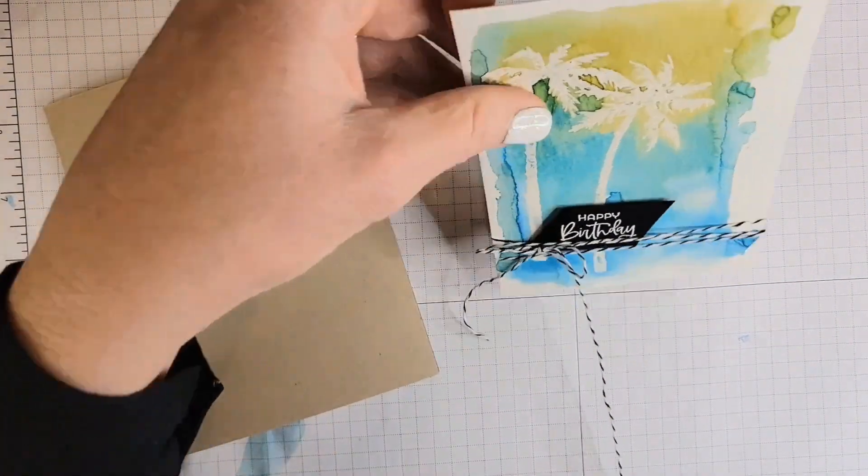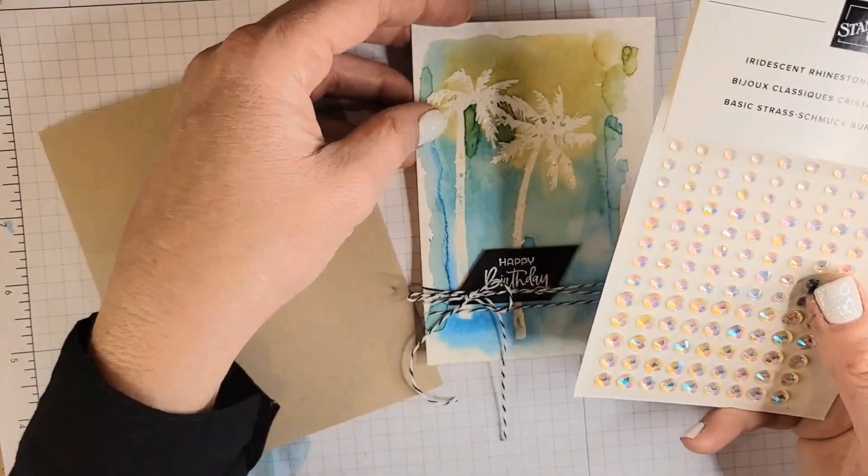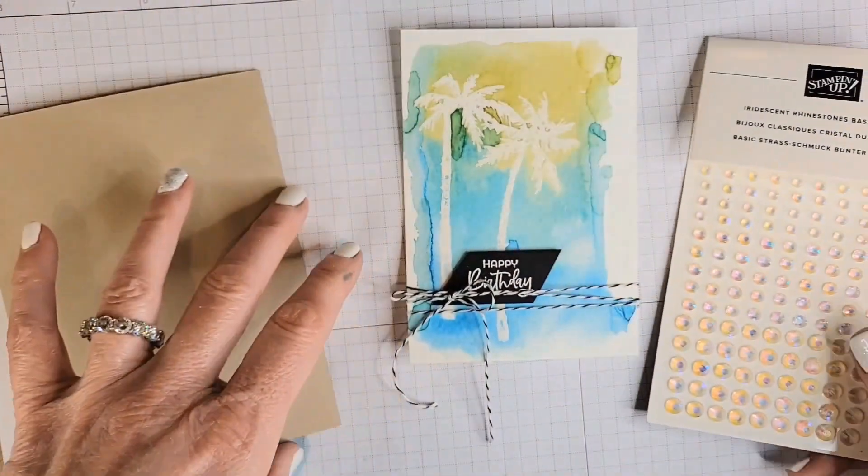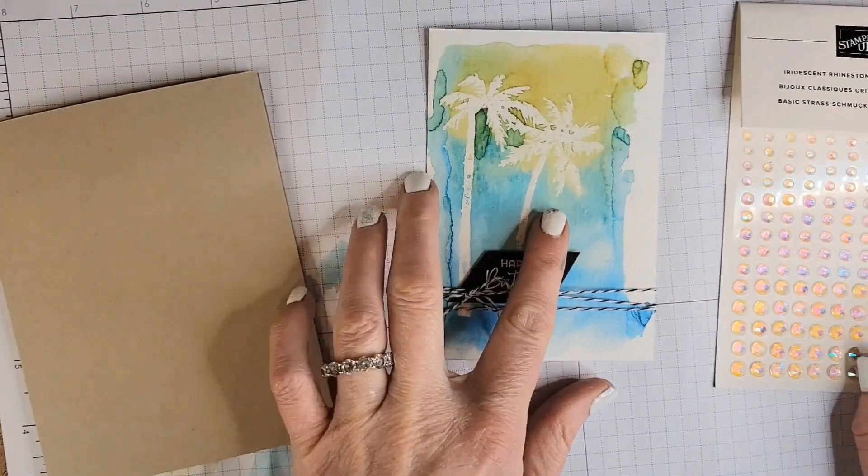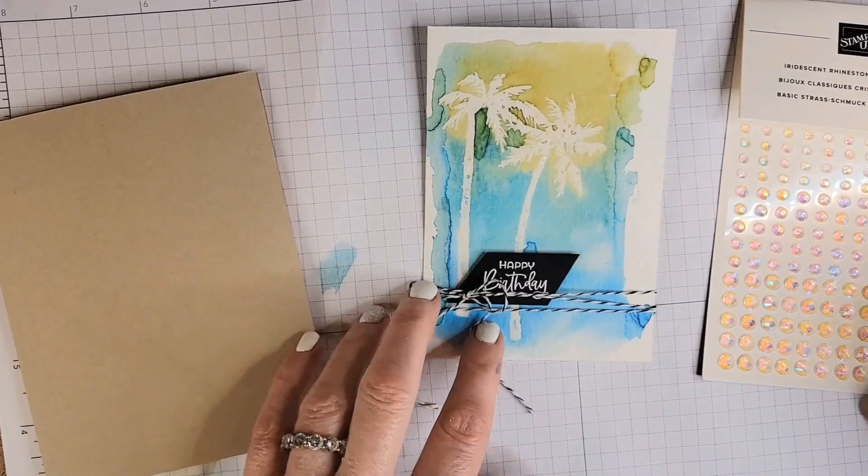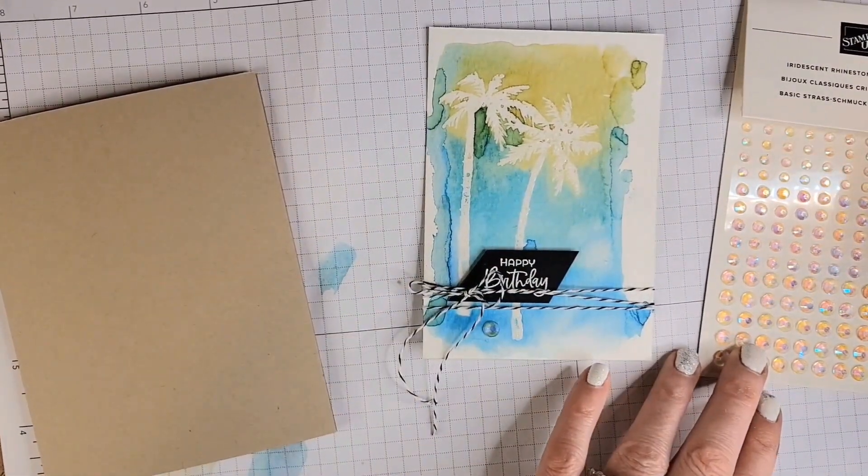Oh, I need to cut off my, there we go. And then the last embellishment, iridescent rhinestones. I love these. They look so cool. And even though they look pink on this sheet, when you layer them over colors, they take on that color. So these will be perfect for our purposes today.